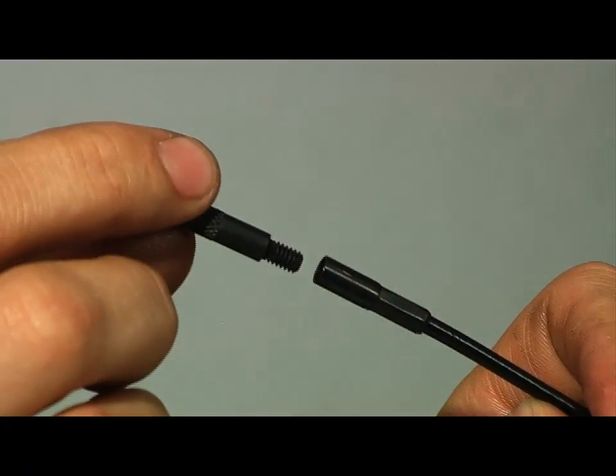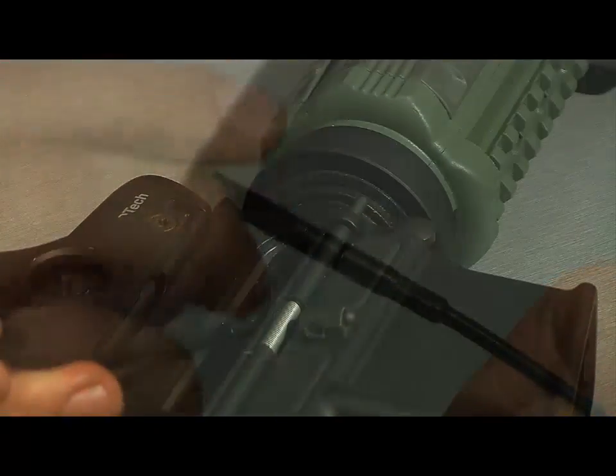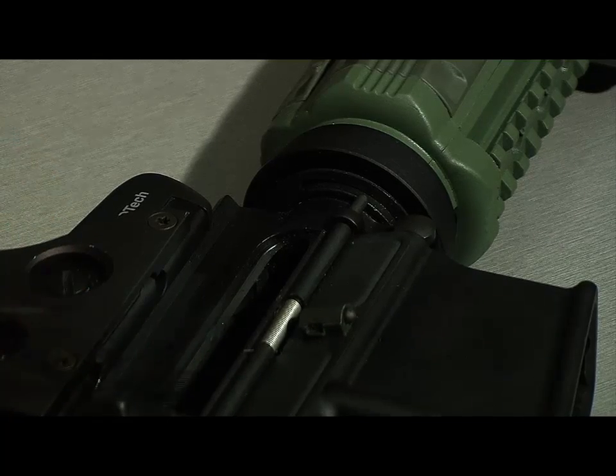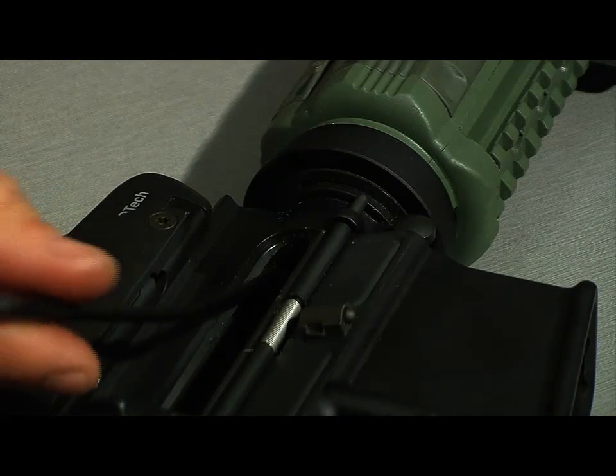To assemble your obstruction remover, you thread it into the end of the cable. Now we are going to insert our obstruction remover into the action, turning the patch as you enter the chamber.